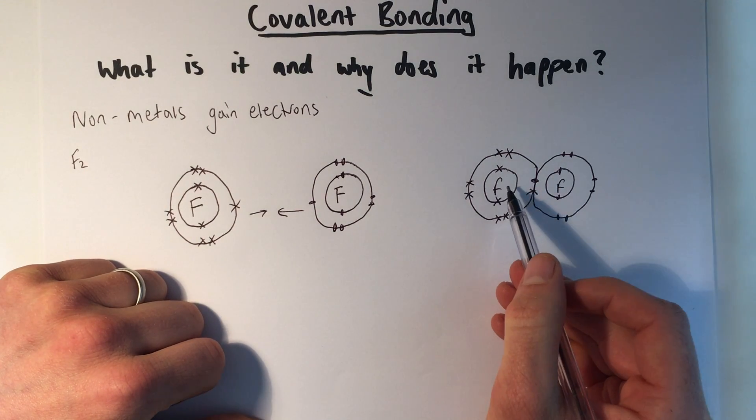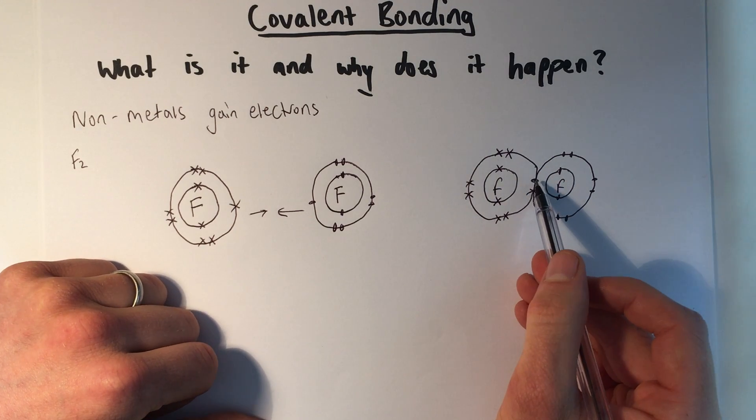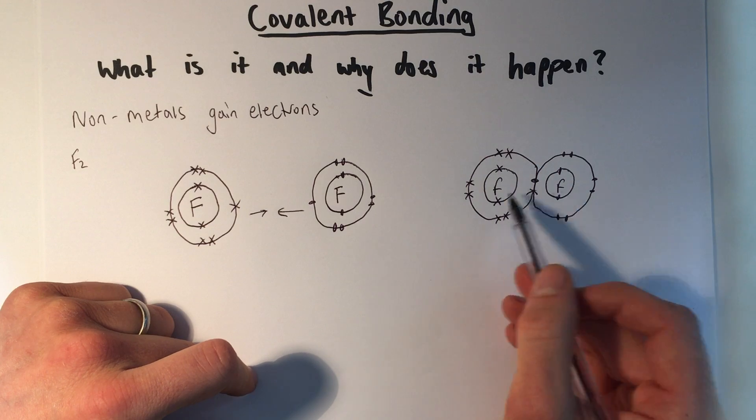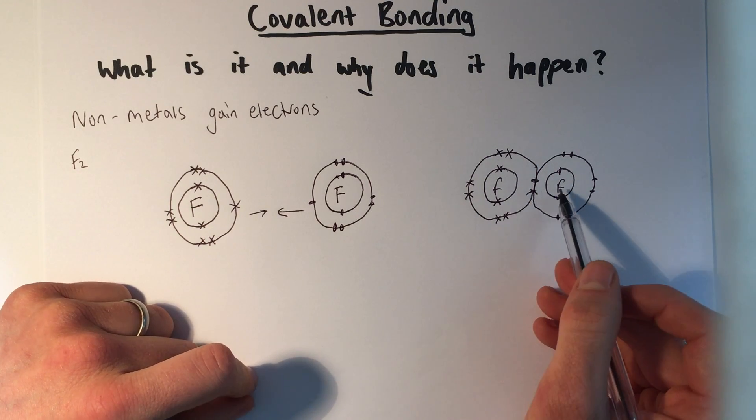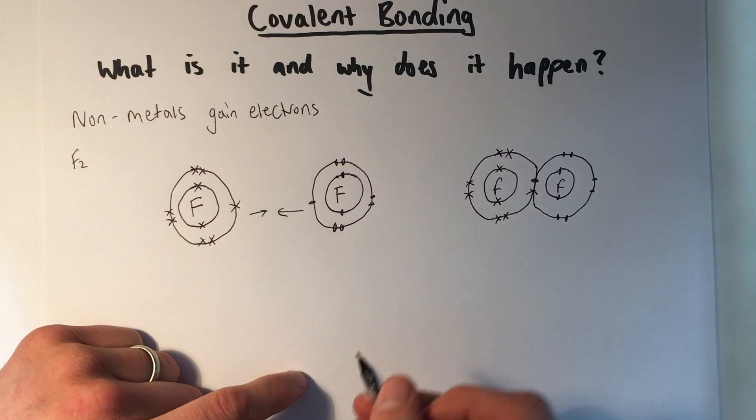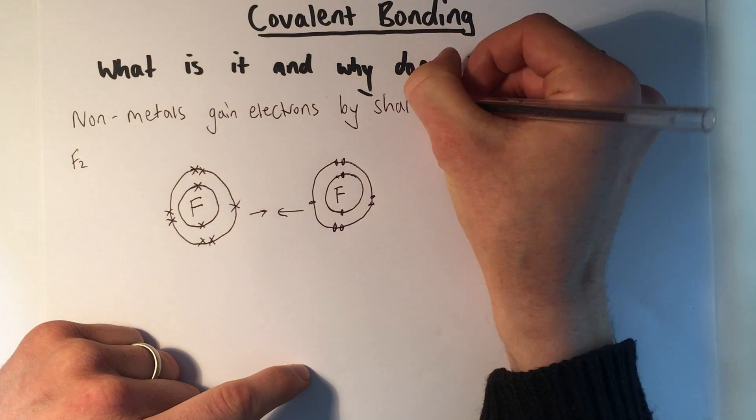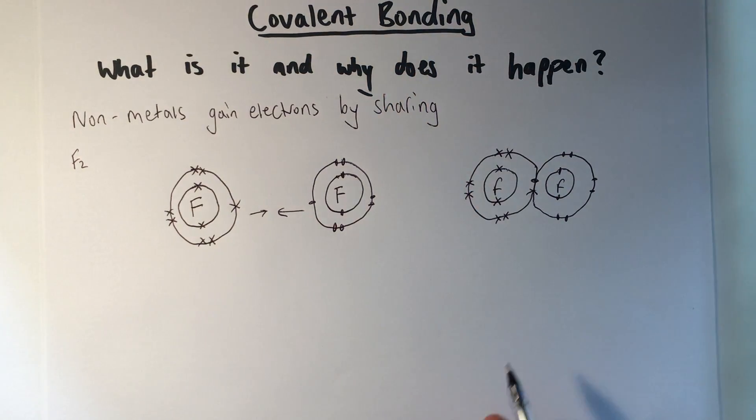And by sharing, if you look at the number that each now has in its outer shell, including that one that is just shared from the other atom, both of these atoms now have a full outer shell of electrons. And they've done that by sharing electrons. So that's how covalent bonding works.